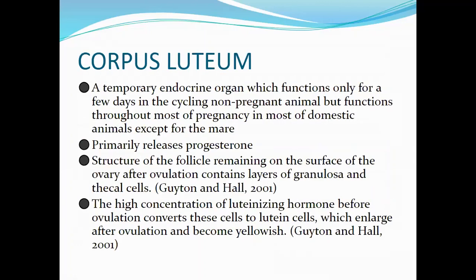The corpus luteum is a temporary endocrine organ which functions only for a few days in cycling non-pregnant animals but functions throughout most of pregnancy in most domestic animals, except in mares because mares have endometrial cups. It primarily releases progesterone and is the structure of the follicle remaining on the surface of the ovary after ovulation, containing layers of granulosa and thecal cells. The high concentration of LH before ovulation converts these cells to lutein cells, which enlarge after ovulation and become yellowish.